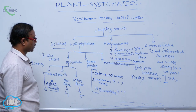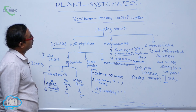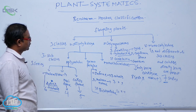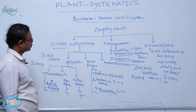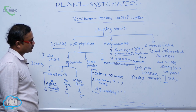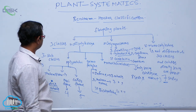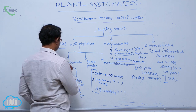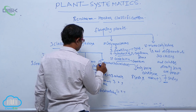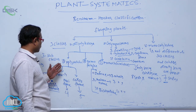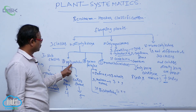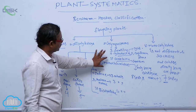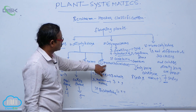That is known as Bentham and Hooker's classification. According to this classification, flowering plants are divided into three classes. In those three classes, the first is Dicotyledons, the second is Gymnosperms, and the third is Monocotyledons. Dicotyledons are again divided into three subclasses: Polypetalae, Gamopetalae, and Monochlamidae. Polypetalae means petals are in free condition. Gamopetalae means petals are in fused condition. Monochlamidae means only one whorl of perianth is present.